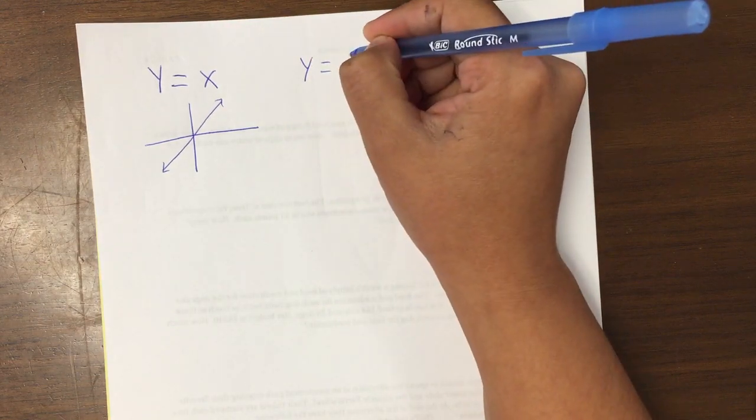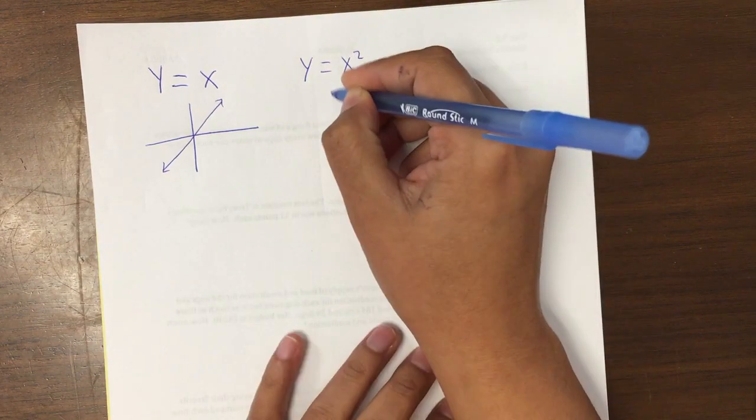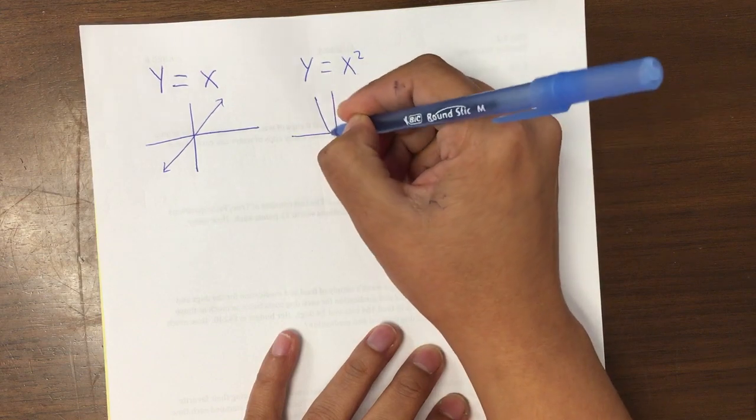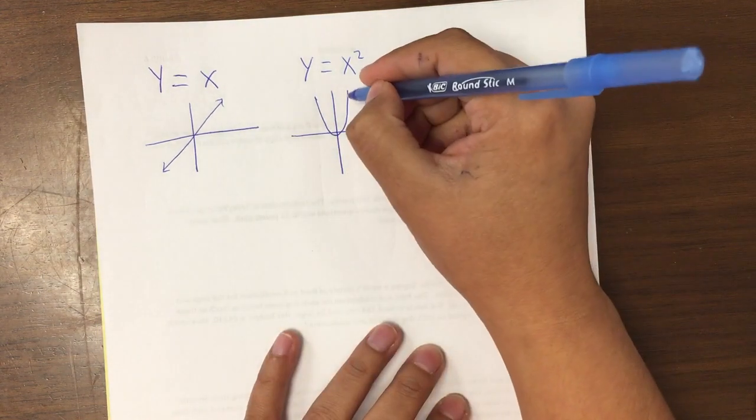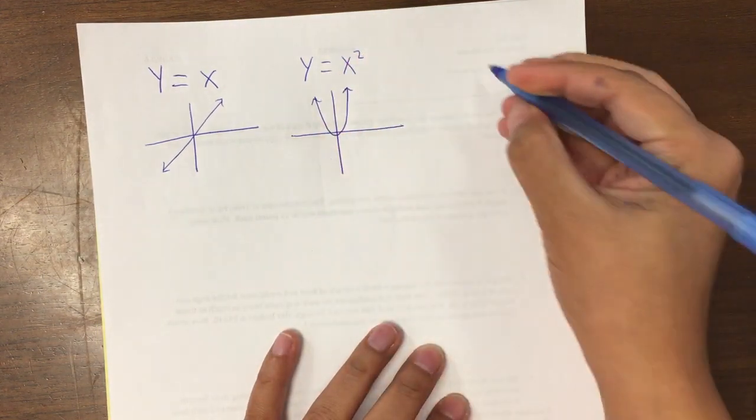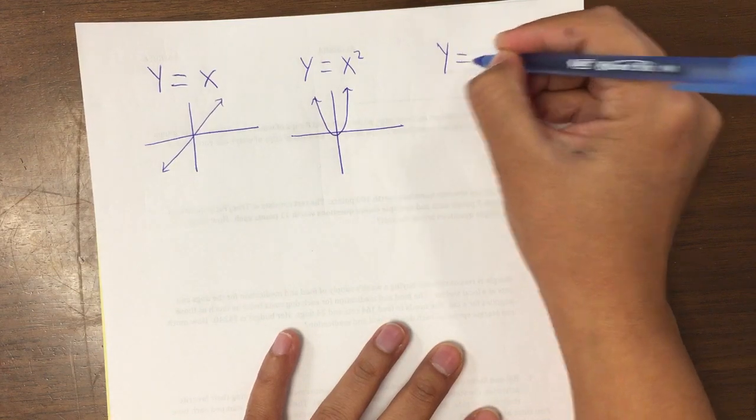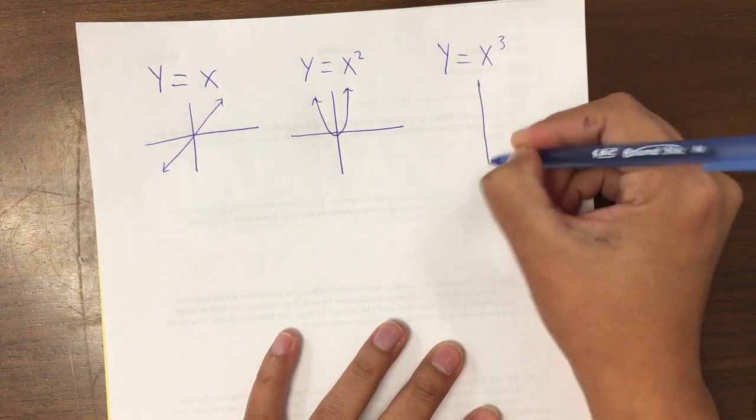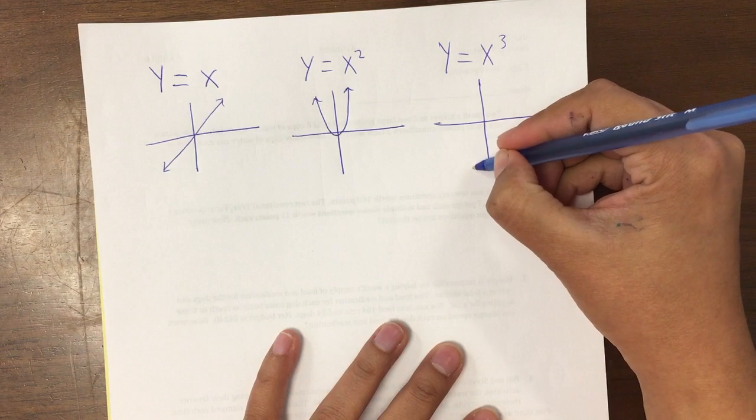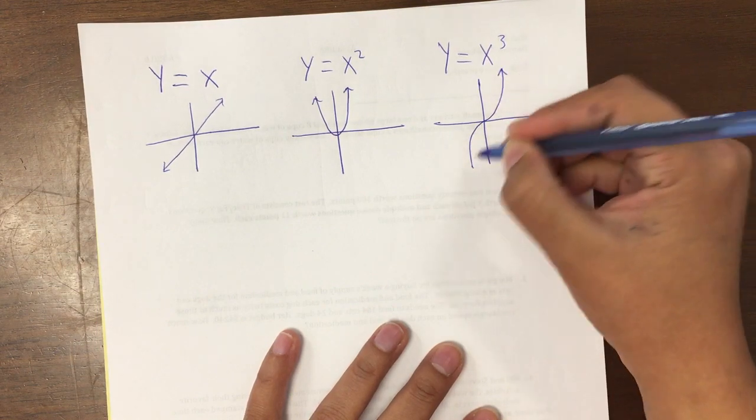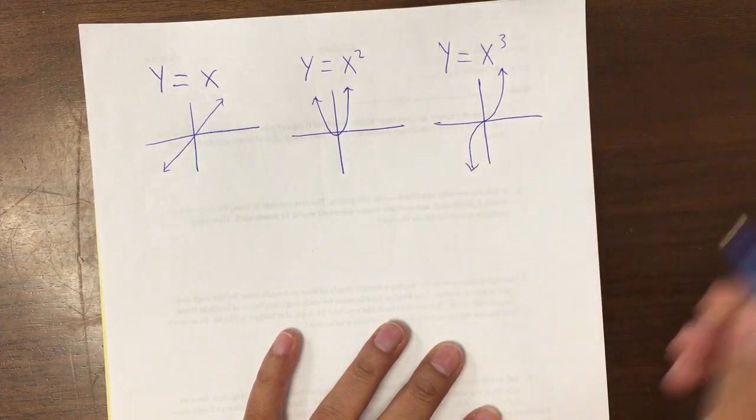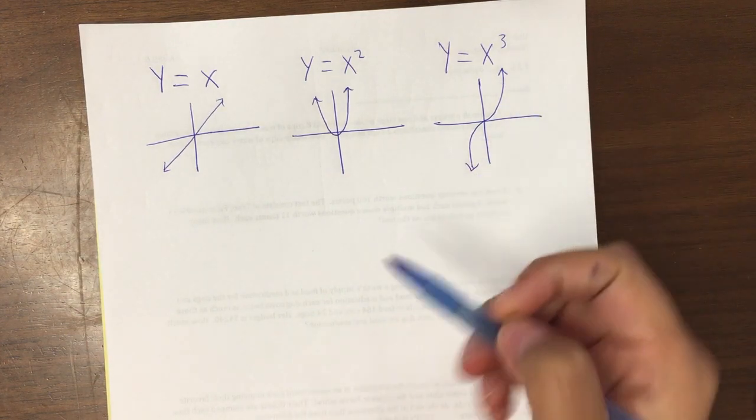Then we have the y equals x squared. And you get a parabola. Y equals x cubed. And I know that you have these in your notes, but the more you write it, the more you will remember. It produces this kind of graph.